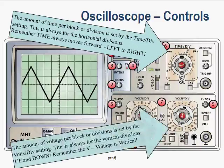A second key control is the voltage per division setting, where we set the voltage or amplitude of each vertical block — we are talking about up-down movement now. Remember the V: V is for voltage, and it represents vertical movement.